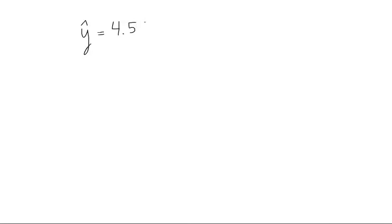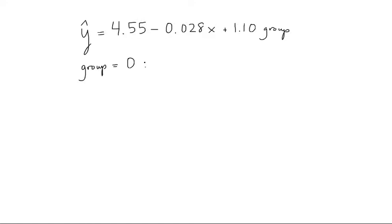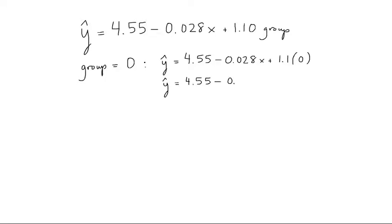Minitab has reported that the estimated regression equation is 4.55 minus 0.028x plus 1.1 times group. So that means for group 0, the estimated regression equation is 4.55 minus 0.028x plus 1.1 times 0. Therefore, the estimated regression equation for group 0 is 4.55 minus 0.028x, because the last term drops out due to the 0.